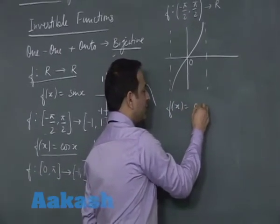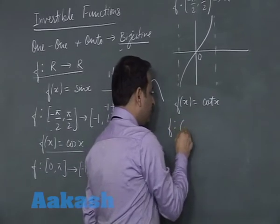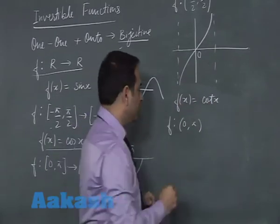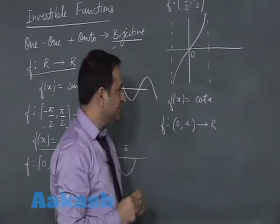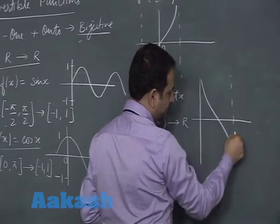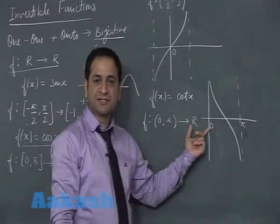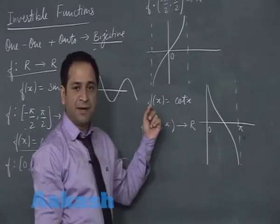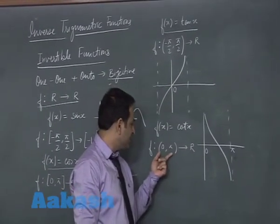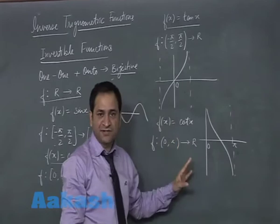For the cot x function, a different domain is set. The domain is from 0 to π. Under this setting, looking at the graph from 0 to π, this function is a continuous and decreasing function covering all of R. The interval 0 to π is chosen because in this interval the function is continuous. Under this setting, this function is invertible.